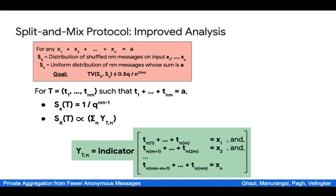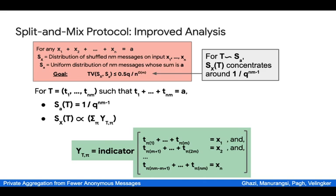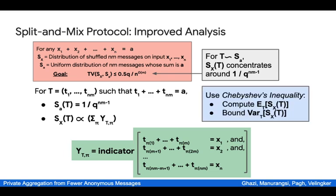Our original goal is to bound the total variation distance between S_x and S_a, where S_a is the uniform distribution over all such t's. What we really want to show is that the probability mass of t in S_x is well concentrated around some number when t is drawn from S_a. To prove the desired concentration bound, we use the Chebyshev inequality, treating the probability mass as a random variable. To apply Chebyshev, we must compute the expectation of this random variable and bound its variance; together these give the desired concentration result.